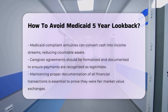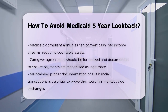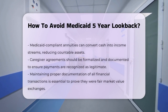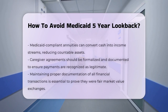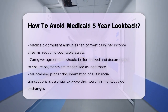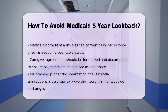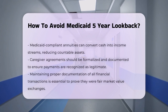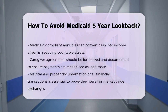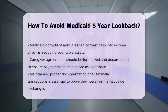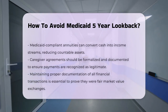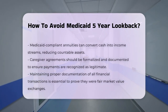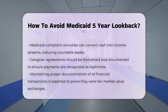This trust must be set up correctly to comply with Medicaid rules. Third, purchase Medicaid-compliant annuities. Converting a lump sum of cash into a stream of income through a Medicaid-compliant annuity can help lower your countable assets without triggering look-back penalties.